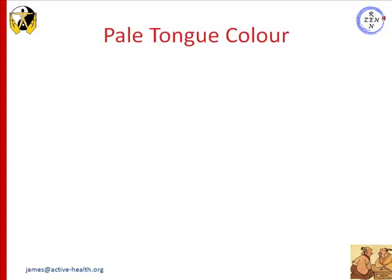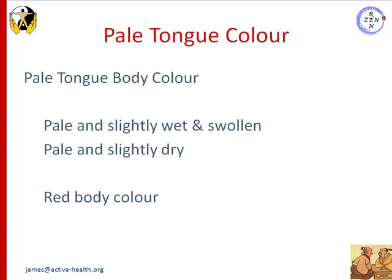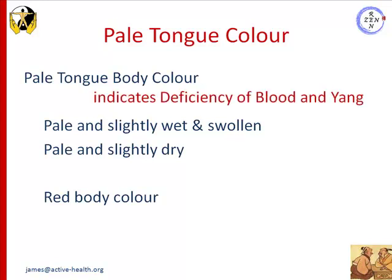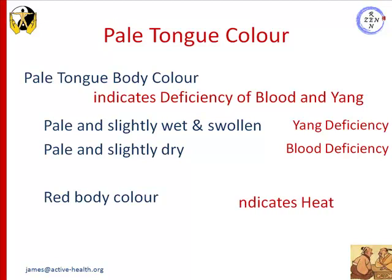Now let's look at pathological indications on the tongue. First, the pale tongue color — in other words, the tongue is not pink or pale red but is pale in color. This is usually indicative of a deficiency of blood and yang. It can also indicate a deficiency of qi, where there's not enough energy to push blood up into the tongue. If the pale tongue is also slightly wet and swollen, it indicates yang deficiency. If it's pale and slightly dry, it's usually a blood deficiency. A red body color indicates heat.